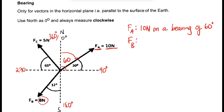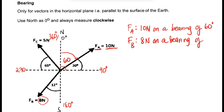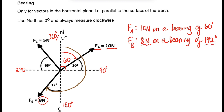Let's look at Force B. The magnitude is 8 newtons. We start from north again and move clockwise until we hit the force. This gives us 180 degrees, plus the additional 12 degrees, which equals 192 degrees. So the 8 newton force is on a bearing of 192 degrees.